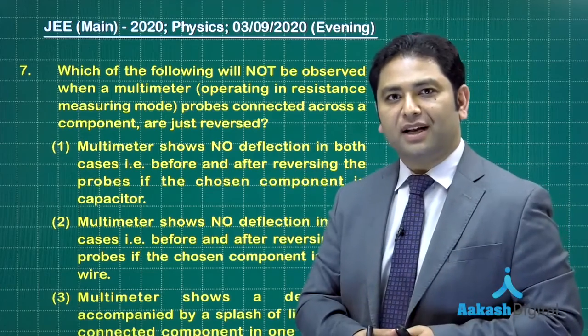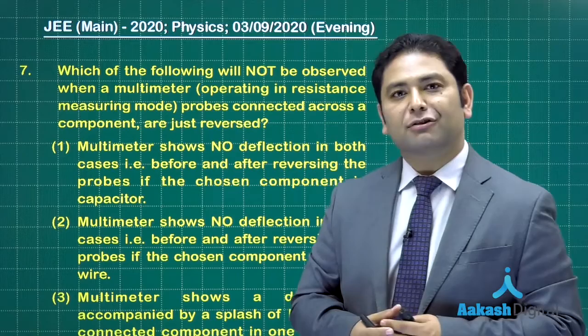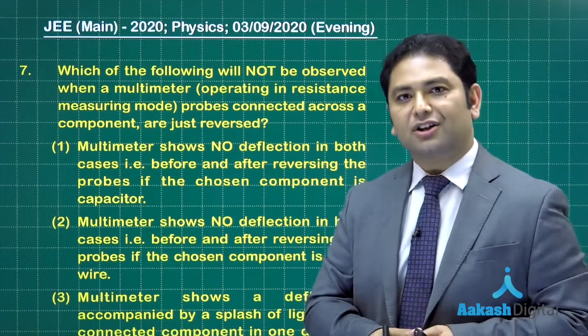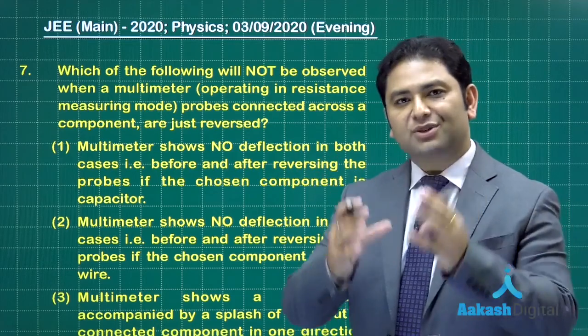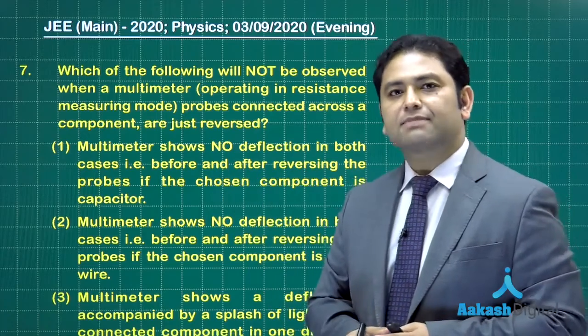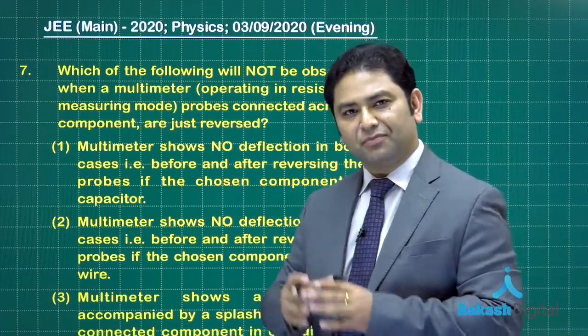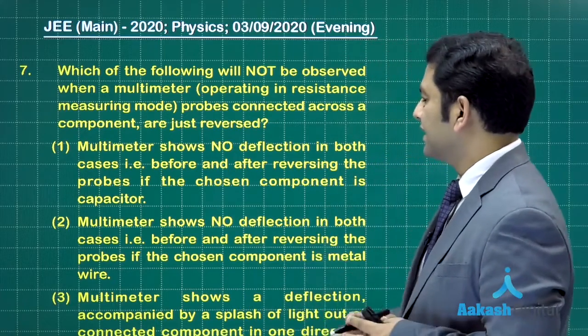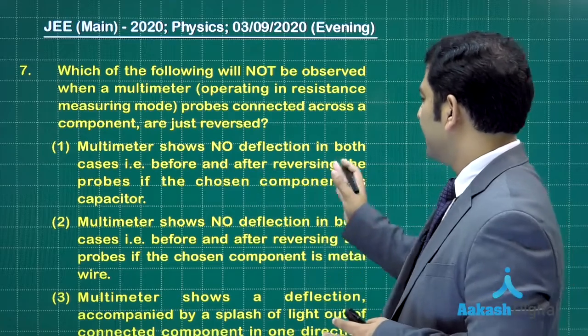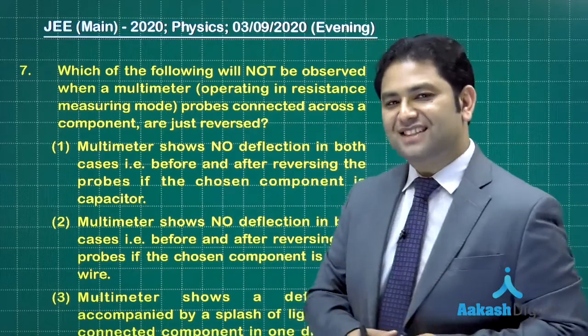We'll scan all the options one by one, but before that, how does a multimeter measure the resistance? You can treat it as a voltage source, a constant voltage source. Whatever device is connected across that voltage source, there will be a current, and voltage per unit current - that will be the resistance. That's how the measurement is done, quite a simple operation. Now let's see: multimeter shows no deflection in both cases, that is before and after reversing the probes, if the chosen component is capacitor.